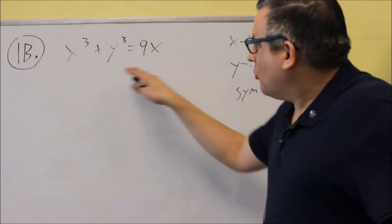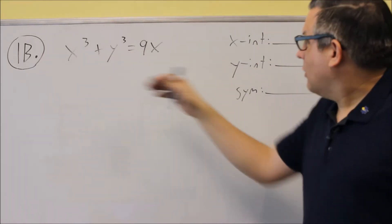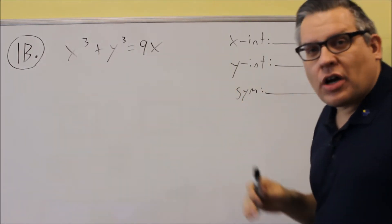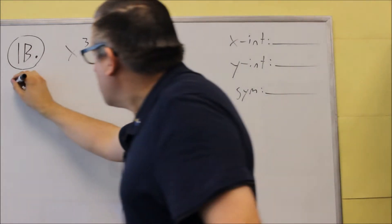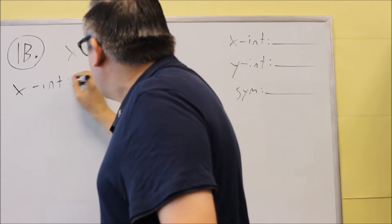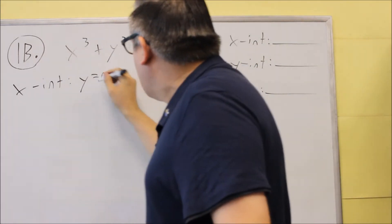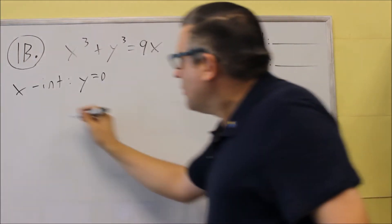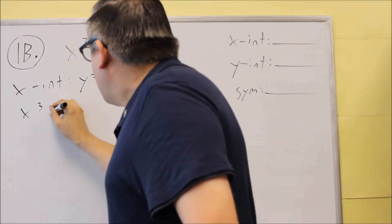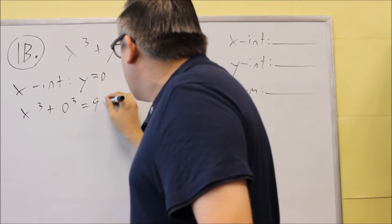For part B, we're doing the same thing again — finding the intercepts and symmetry. We do the same process we did for part A. We'll start with the intercepts. To find the x-intercept, you put in 0 for y. So we have x cubed plus 0 cubed equals 9x.